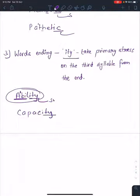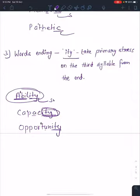Capacity has the I-T-Y suffix. We have to count: one here, two here, third is where the stress is. Third example is opportunity. Opportunity, opportunity. We have to count: one, two, and this is third here.